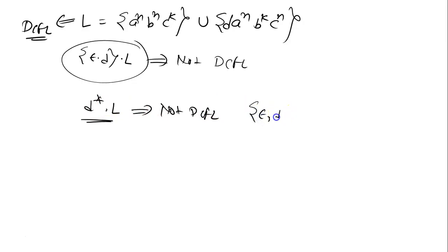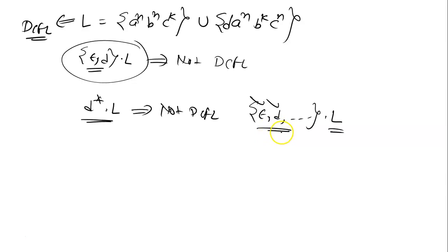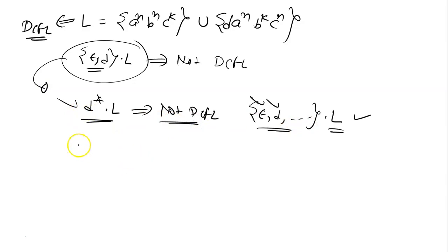Why? Because d* contains: empty string, d, d², and so on. So d* · L will again contain {ε, d} · L as a subset, and the same ambiguity arises — if your string starts with d, you don't know which part to check. So d* · L is not DCFL, for the same reason as before.